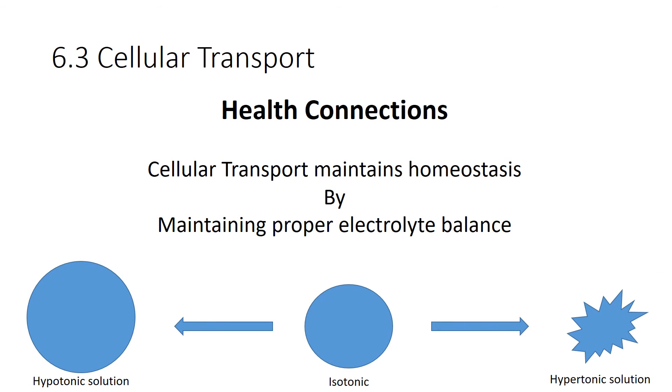For example, here's our health connections to active transport, facilitated transport, and diffusion. Basically, all cells have to maintain homeostasis, and cellular transport helps maintain homeostasis. By maintaining electrolyte balances through both active transport and facilitated diffusion, you can maintain your water balance. So if your cell is isotonic, it's going to stay about the same size. If you become in a hypertonic solution, the cell may shrink as it loses water. And in this case, cells may actually have to pump in electrolytes to maintain water balance. If a cell gets into a hypotonic solution, it may actually have to pump out electrolytes to maintain proper water balance. So cells are constantly moving things across their membranes to maintain water and electrolyte balance.